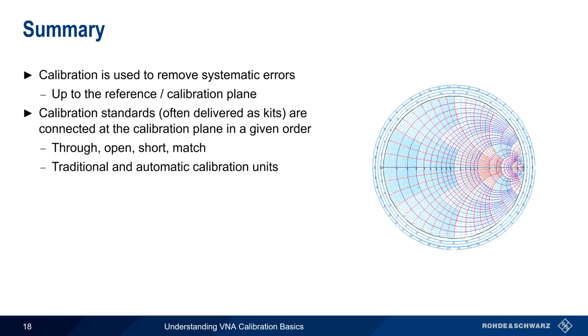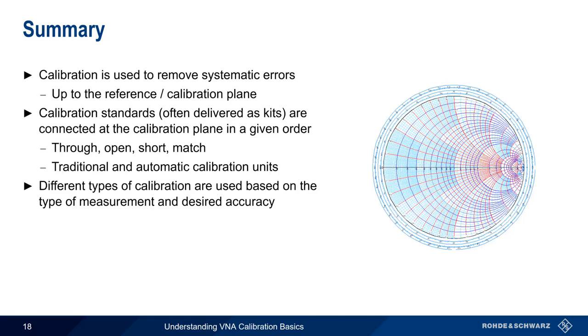There are many different kinds of calibration, and we choose our calibration type based on the type of measurements we're making, for example reflection versus transmission, as well as the desired level of accuracy. A normalization is faster because it only uses a single calibration standard but is less accurate, whereas a full calibration provides the highest accuracy for a slight increase in time and effort. This concludes our presentation, Understanding VNA Calibration Basics. Thanks for watching.